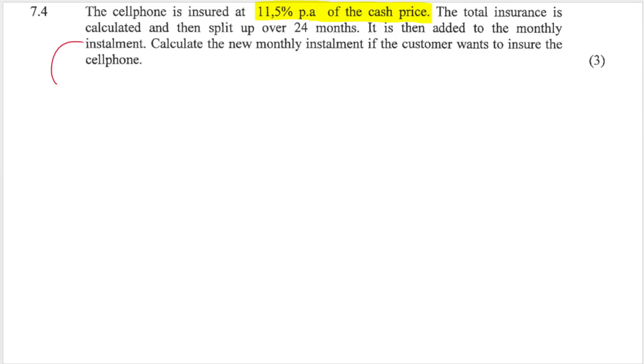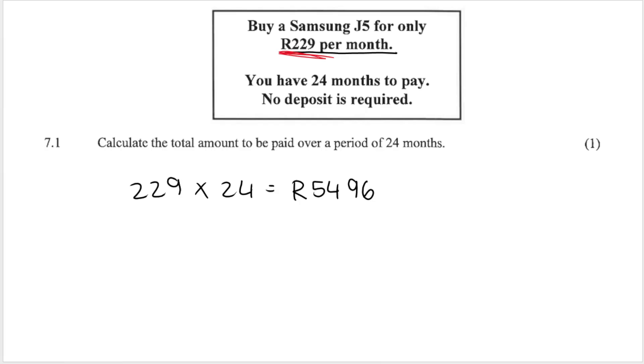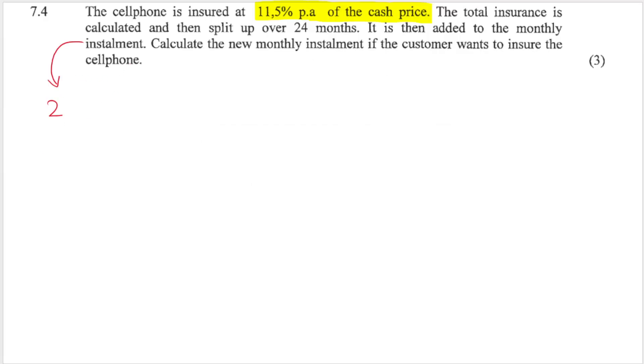Now, you can recall from the little ad that we gave you that the original monthly installment, based on the ad, is R229 per month. That's the original monthly installment. They want me to calculate the new monthly installment. So, the new monthly installment will be the original monthly installment, plus the amount of insurance paid per month. Now, this is where the interpretation of the question is very important.